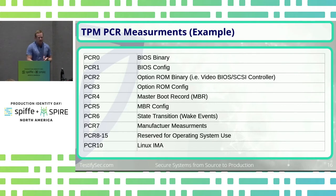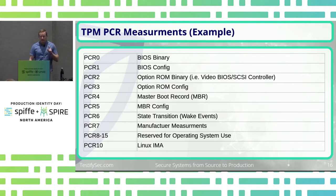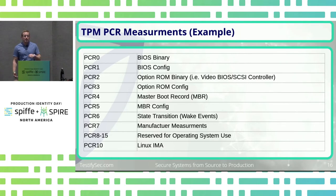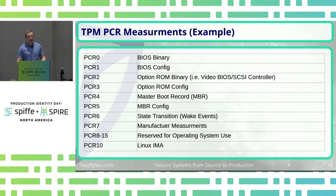We can also select on the BIOS hash and the option ROM hash. One you might not want to use is PCR6 — that's state transition, so if your computer goes to sleep and wakes back up, that's going to change. PCR10 is a really interesting one: the Linux Integrity Management System uses PCR10 when enabled to do integrity checks on all files in the system. So if something like SolarWinds happened on your system, you could look at PCR10 along with IMA to see if something happened that you didn't expect, and not issue that identity.